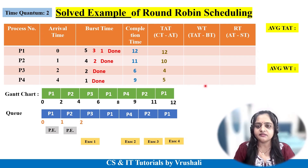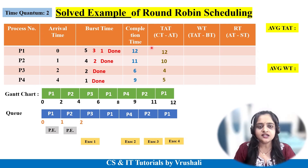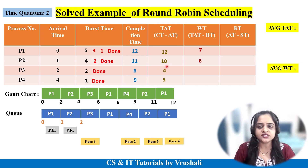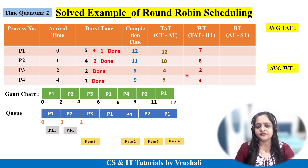Next is waiting time, with formula: turnaround time minus burst time. For P1: 12 minus 5 equals 7. For P2: 10 minus 4 equals 6. For P3: 4 minus 2 equals 2. For P4: 5 minus 1 equals 4.